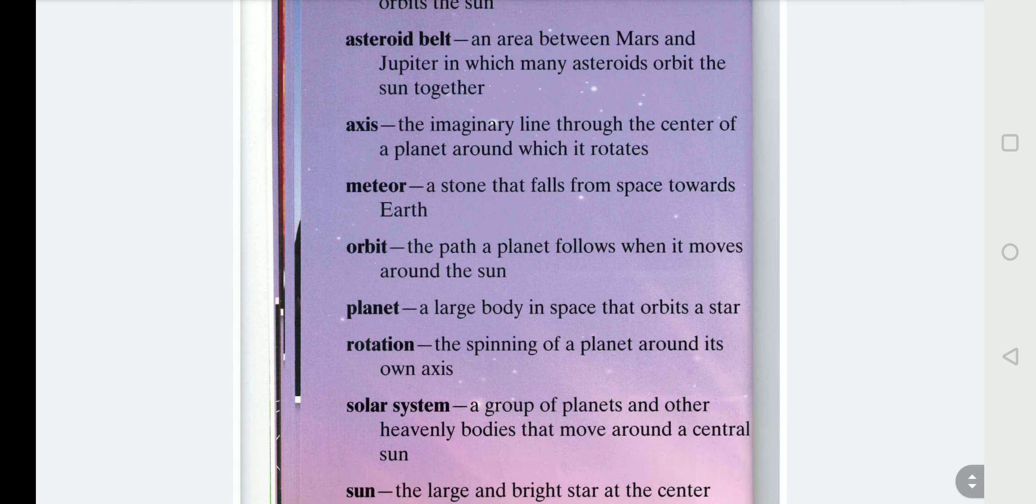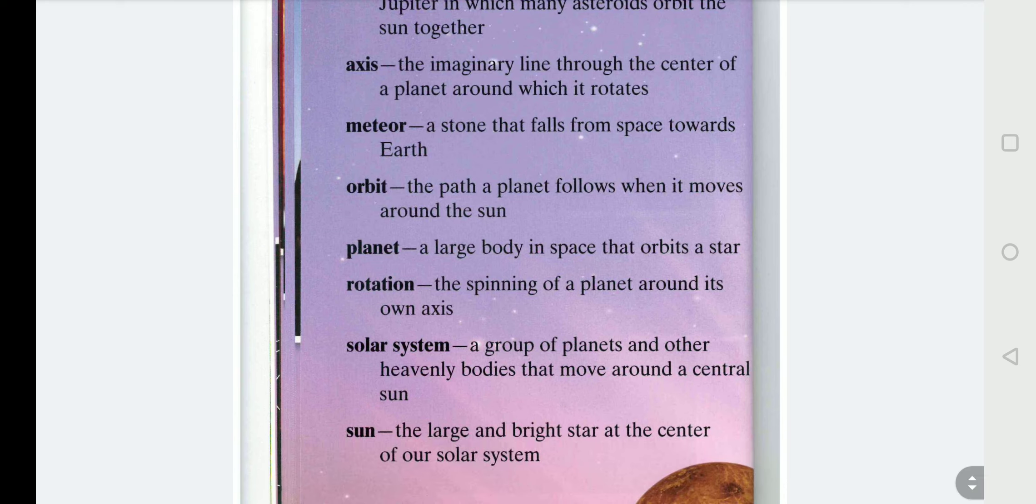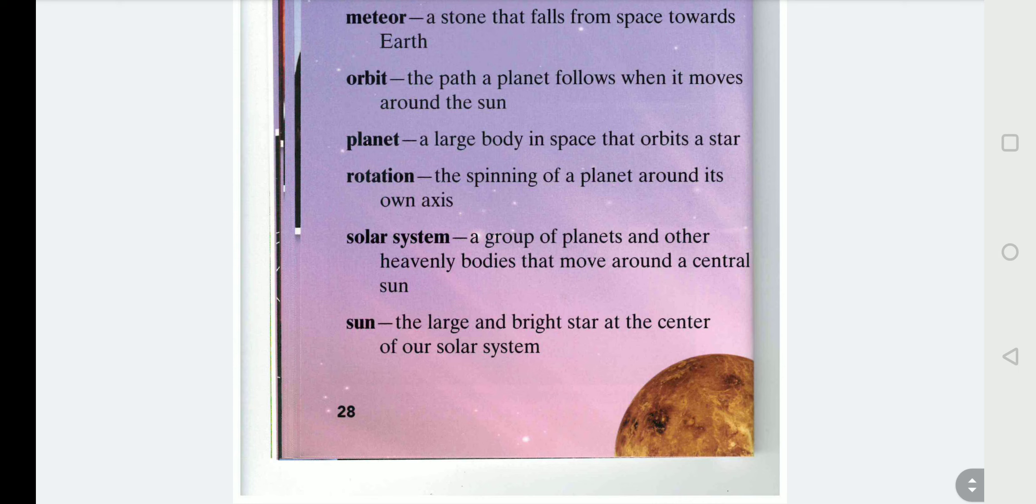Orbit, the path a planet follows when it moves around the Sun. Planet, a large body in space that orbits a star. Rotation, the spinning of a planet around its own axis. Solar System, a group of planets and other heavenly bodies that move around a central Sun. And the Sun, the large and bright star at the centre of our solar system.